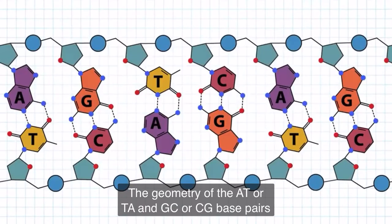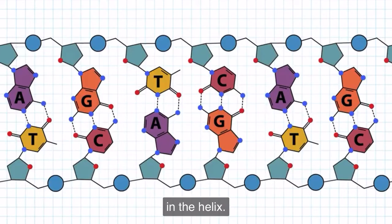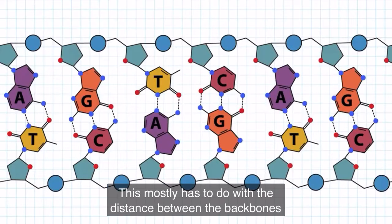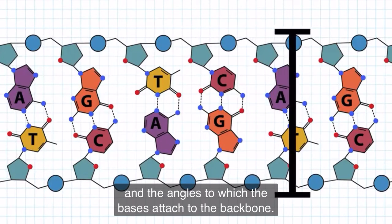The geometry of the AT or TA and GC or CG base pairs is the same, allowing for symmetry and base stacking in the helix. This mostly has to do with the distance between the backbones and the angles to which the base is attached to the backbone.